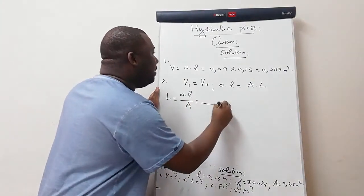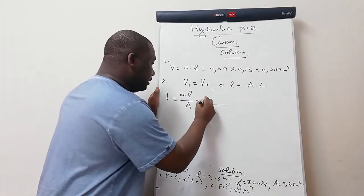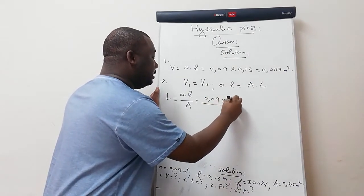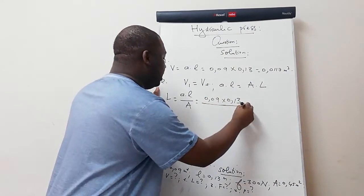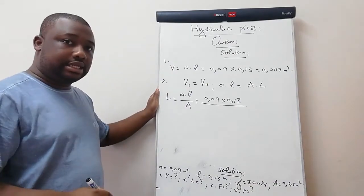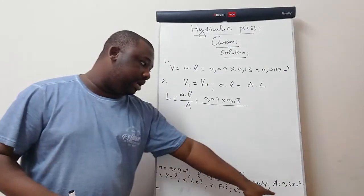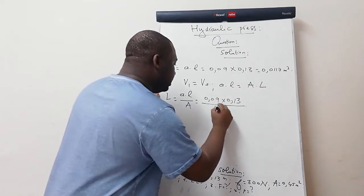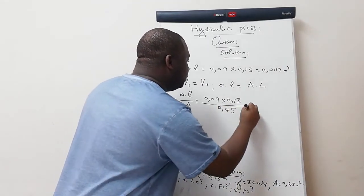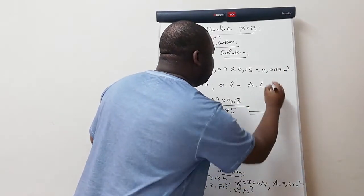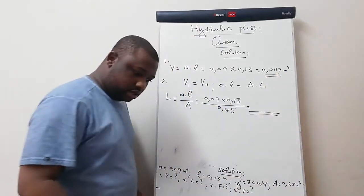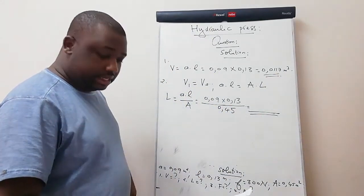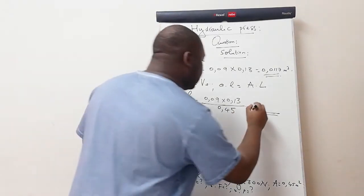Substituting: small a = 0.09, small l = 0.13, big A = 0.45. Calculating gives big L = 0.026 meters.